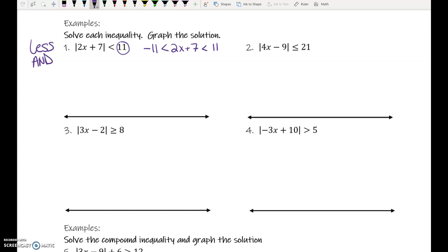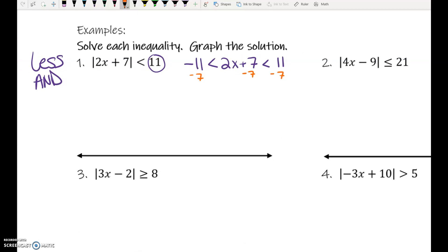Do you know how to solve that type of inequality? Yes. We're going to subtract 7. So, we have negative 18 is less than 2x is less than, is that 4? Mental math sometimes eludes me. Divide by 2. Negative 9 is less than x is less than 2.